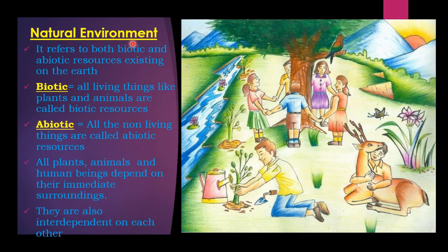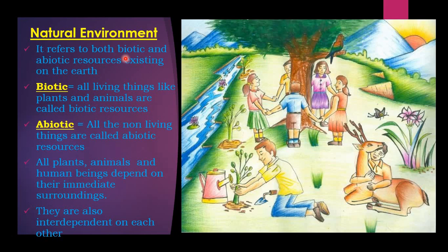What is natural environment? It refers to both biotic and abiotic resources existing on the earth. So, dear children, so far we studied what is environment. Now, what are natural things? It refers to both biotic and non-biotic.